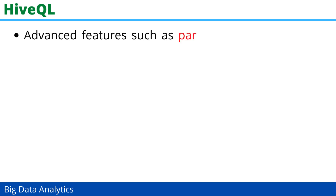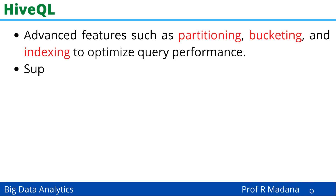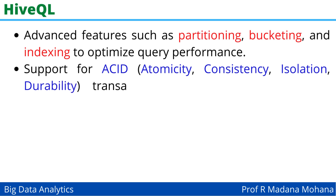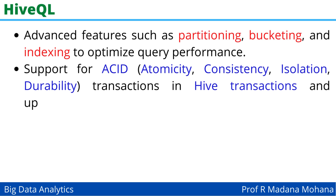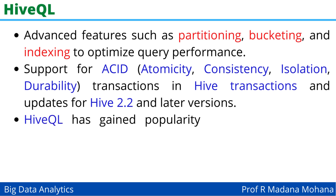Advanced features include partitioning, bucketing, and indexing to optimize query performance. HiveQL also supports ACID transactions — Atomic, Consistency, Isolation, and Durability — frequently called ACID transactions, available in Hive 2.2 and later versions.